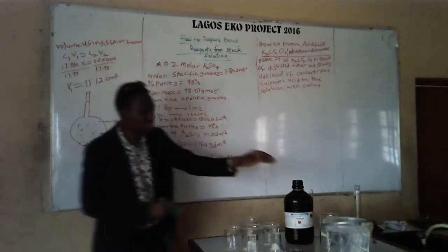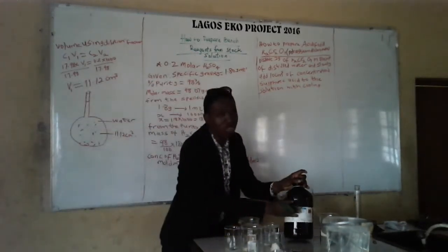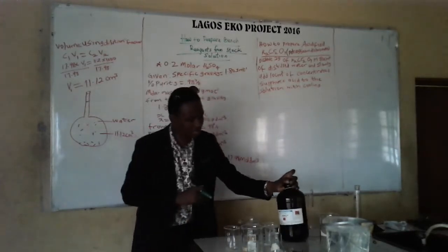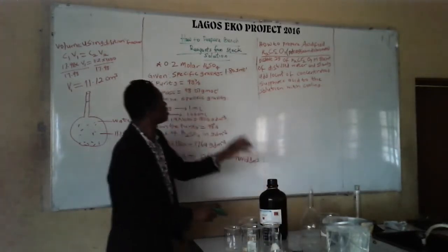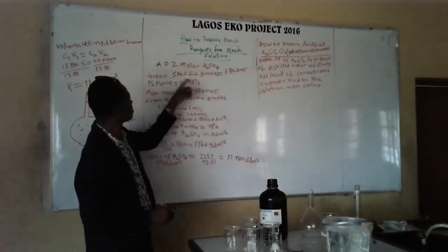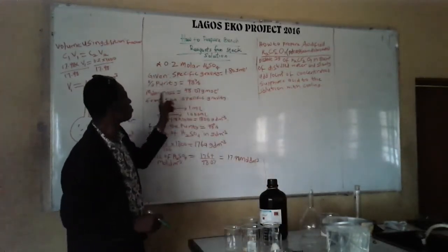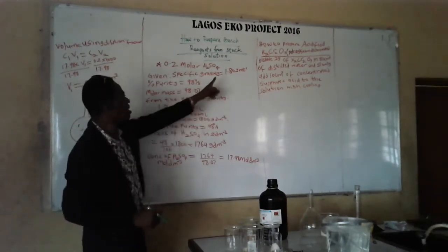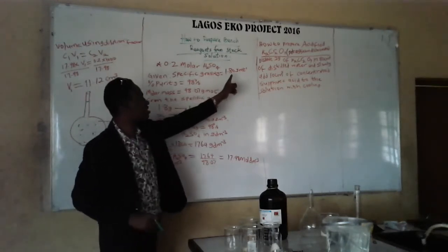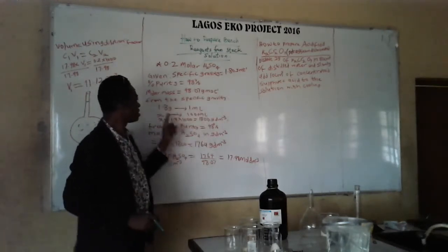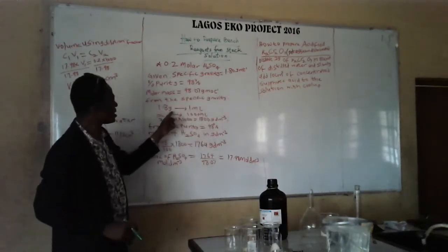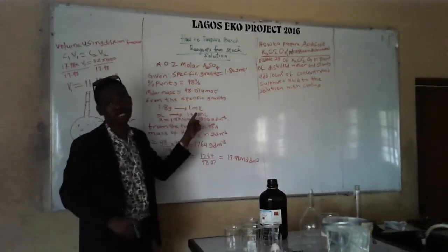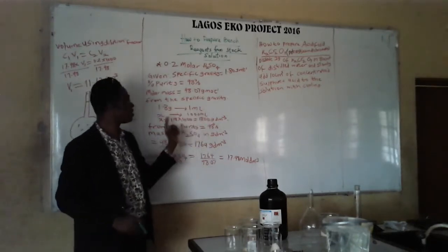For us to do that, we have to consider the information on the stock solution. The information we have on this particular stock solution includes specific gravity and purity. The specific gravity is 1.80 g/mL, meaning 1.8 g equals 1 mL. We then need to convert that to 1000 mL.